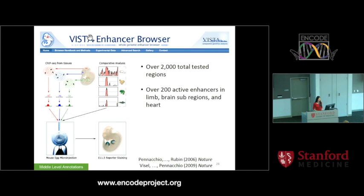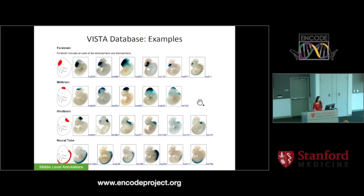Here is the whole matrix of data, with columns indicating developmental time points and rows indicating cell type. For E11.5, we have a number of cell types for which we have both H3K27AC and DNase available in the same cell type. We decided to combine the data available in the cell type along with experimental validation of enhancers generated by Len Panacchio's group integrated into the Vista database, to compare these data with functional data and see what kind of model best predicts enhancer-like regions.